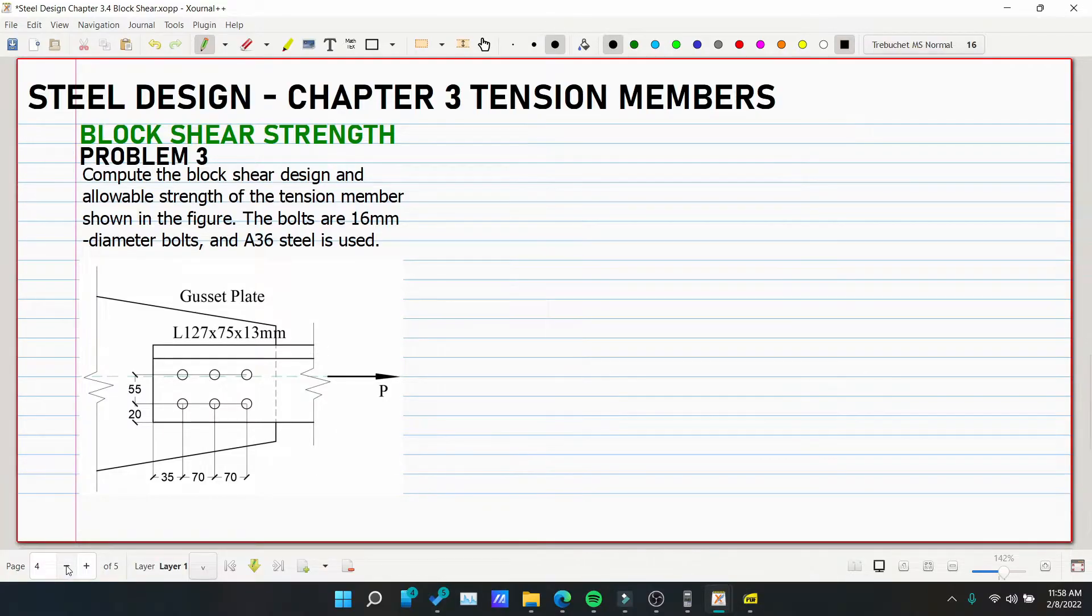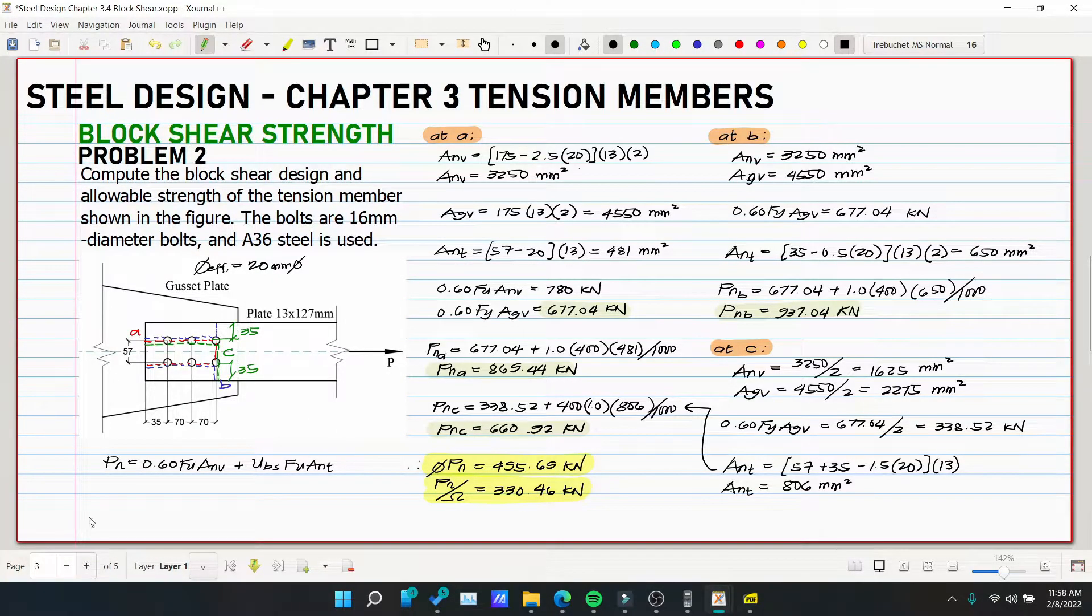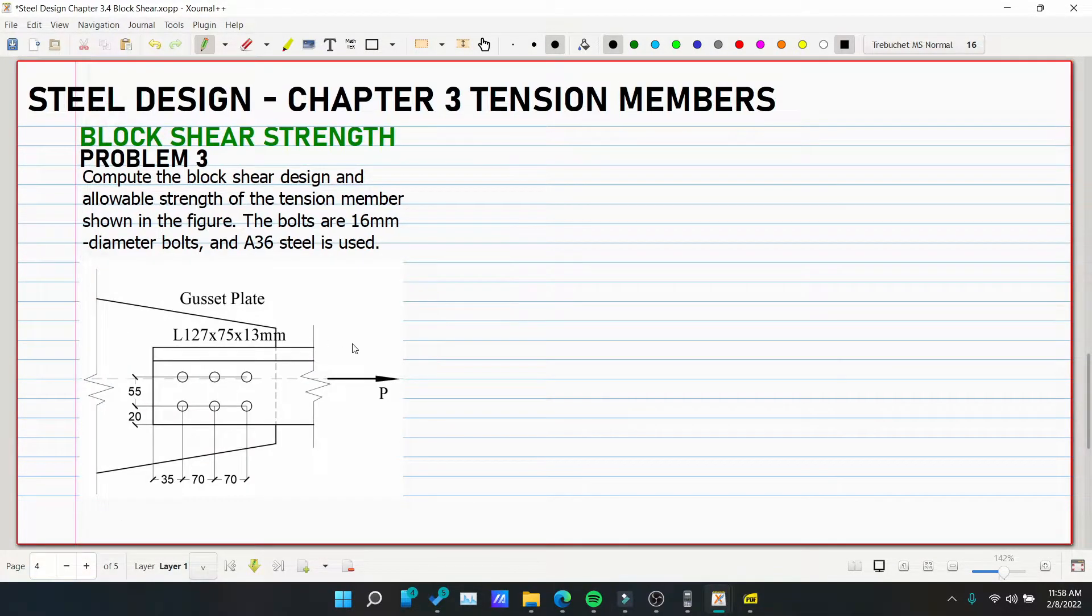So this is similar to our problem number 2. But here it's a plate. In the previous one it was an angle bar. So this means the failure path here is only two.